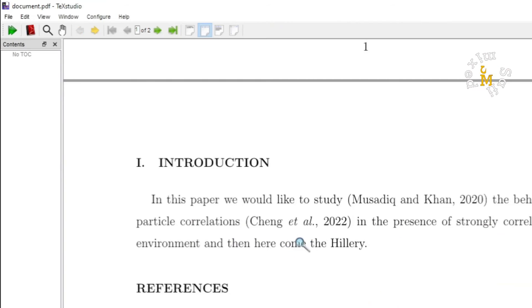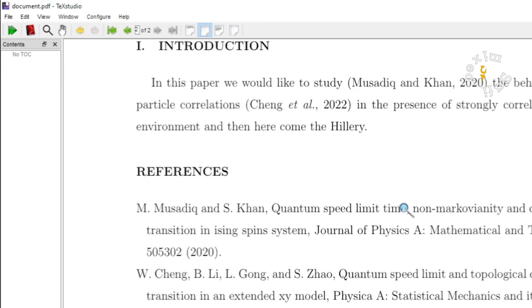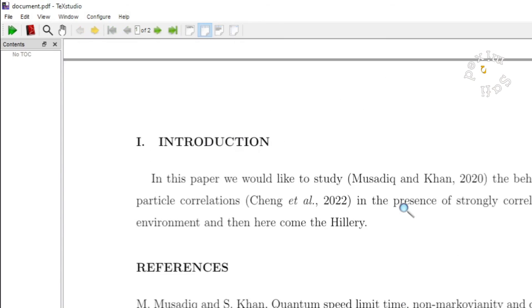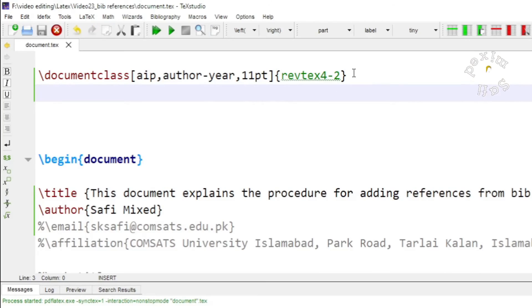So this is what we call the author year style of references. This way you can change the style of the references. While using revtex4 we can change the style of the references by putting the name of that journal inside the optional argument of the document class and I can even change this to numeric which is in fact the default style of APS and AIP.